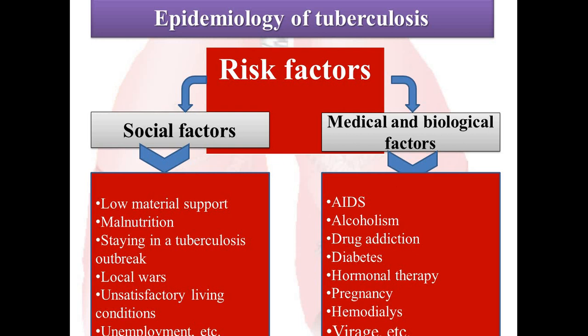Regarding the epidemiology of tuberculosis, there are four determinants, and risk factors are divided into two parts: social factors and medical/biological factors. Social factors include low material support, malnutrition, staying in tuberculosis outbreak areas, local wars, unsatisfactory living conditions, and unemployment. Medical and biological factors include AIDS, alcoholism, drug addiction, diabetes, hormone therapy, pregnancy, haemodialysis, and viral infections.